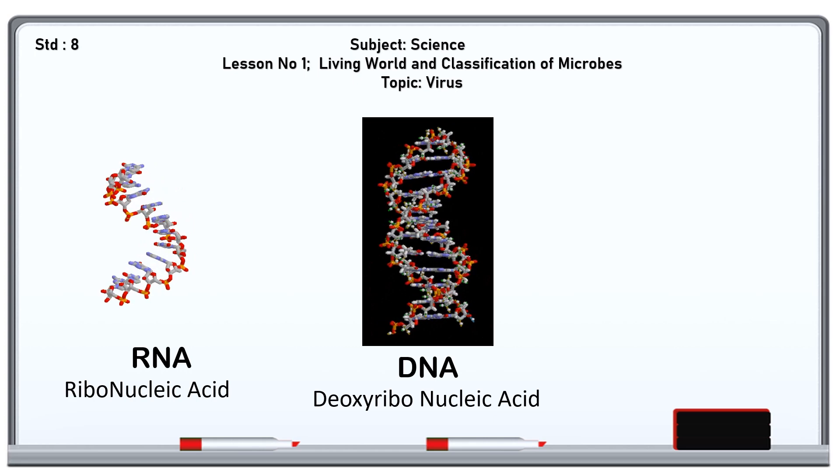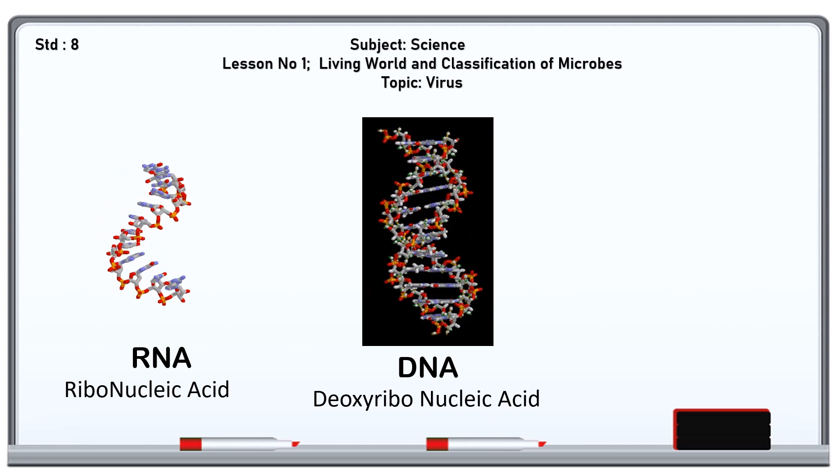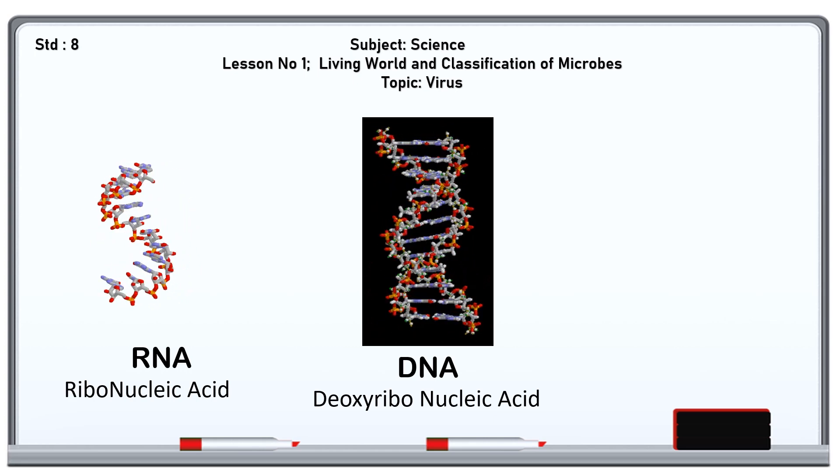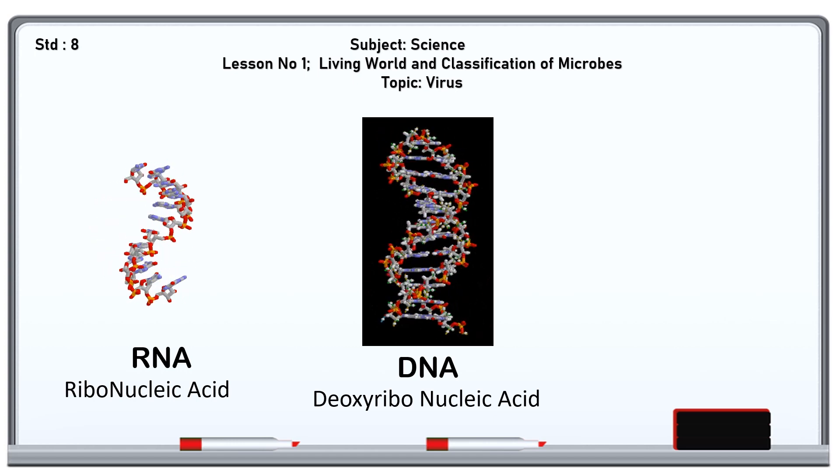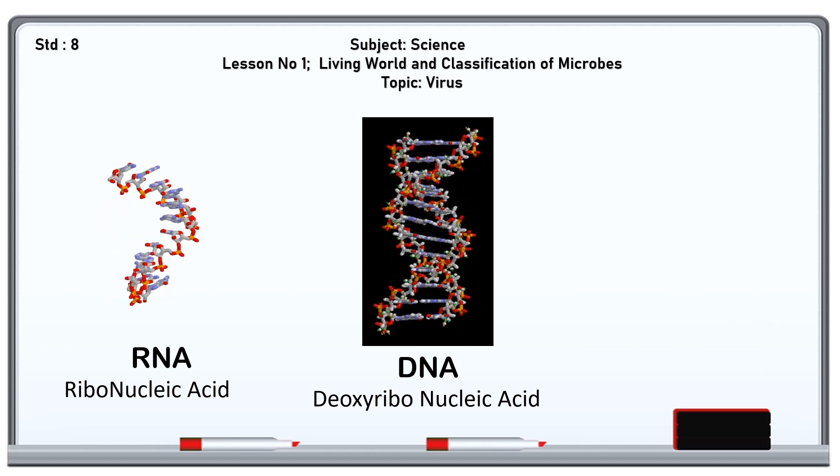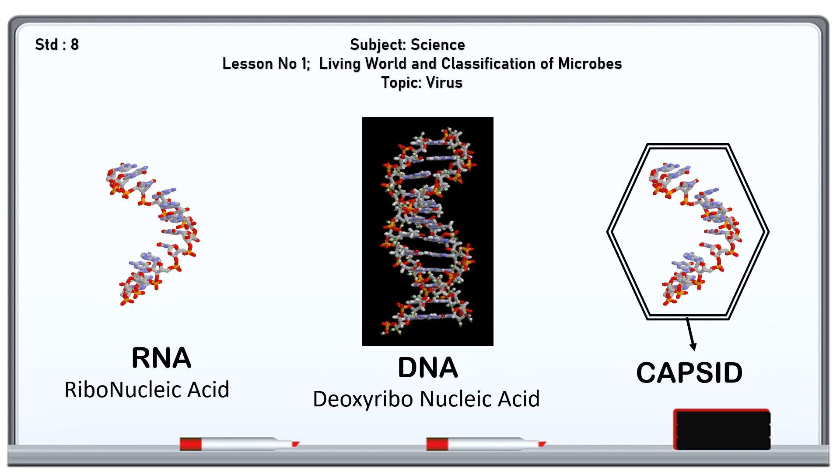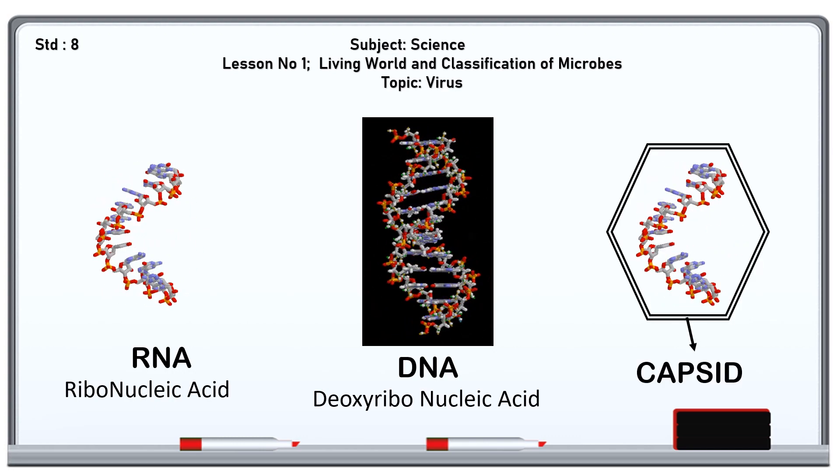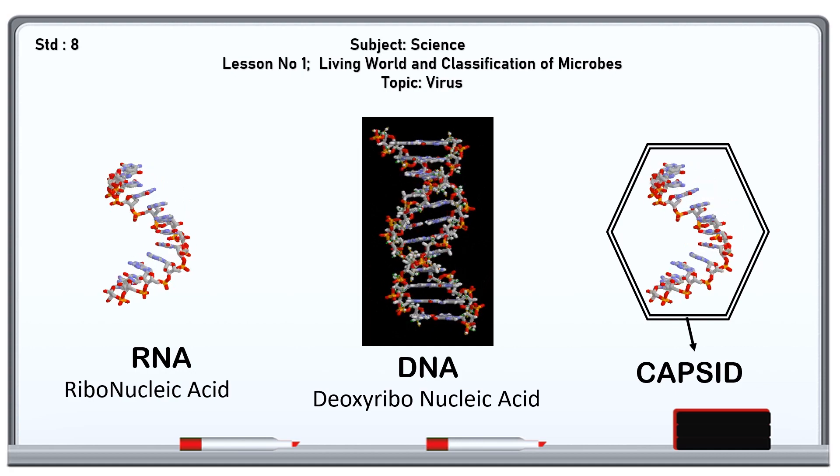Viruses consist of some genetic material like the DNA, deoxyribonucleic acid, or RNA, ribonucleic acid, which is within a protective protein coat called a capsid.